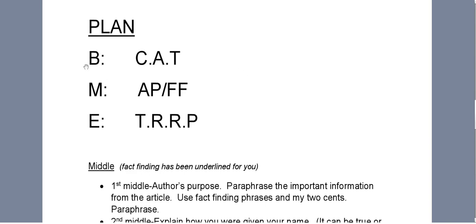Going back to the plan, we're done with our beginning. You've written your catch, asking, and tell, and now we're ready for the middle. You're going to skip a line, go to a new line and indent, and you're going to start with your AP, author's purpose.